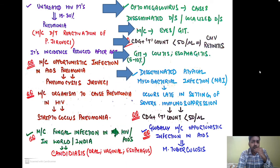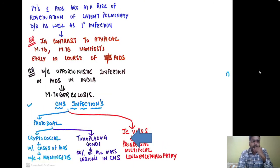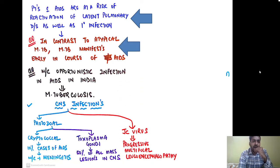AIDS patients also present with disseminated atypical mycobacterial infection, occurring late in severe immunosuppression when the CD4+ T cell count is less than 50 cells per microliter. Globally, the most common opportunistic infection in AIDS is Mycobacterium tuberculosis. Patients with AIDS are at increased risk of reactivation of latent pulmonary tuberculosis as well as new primary infection. In contrast to atypical mycobacteria, typical Mycobacterium tuberculosis manifests earlier in the course of disease. The most common opportunistic infection in AIDS — both in India and globally — is Mycobacterium tuberculosis.